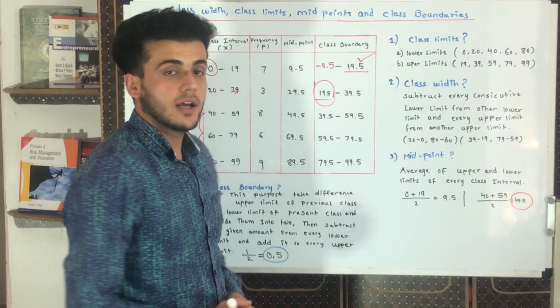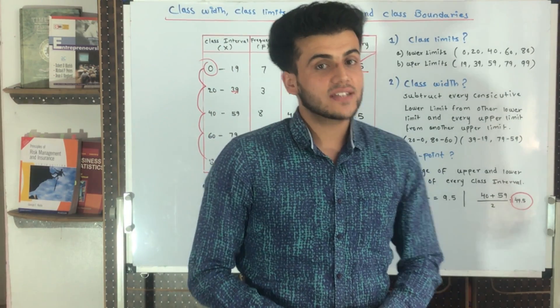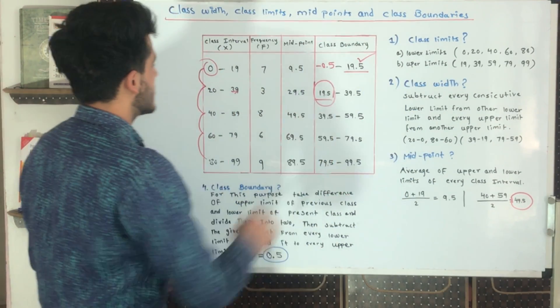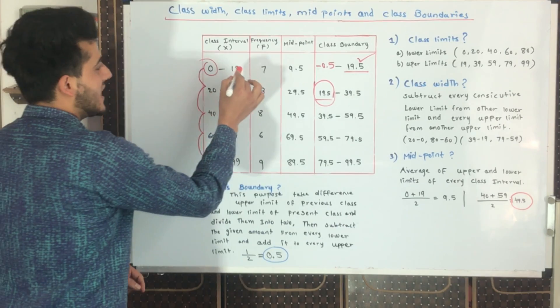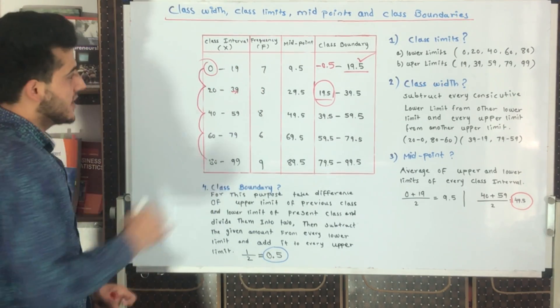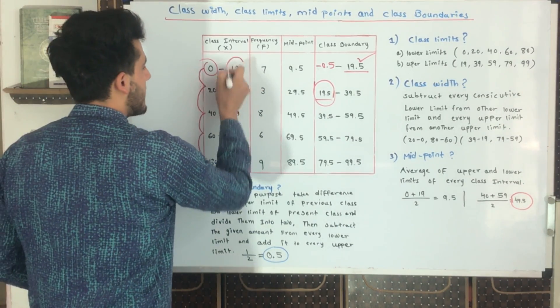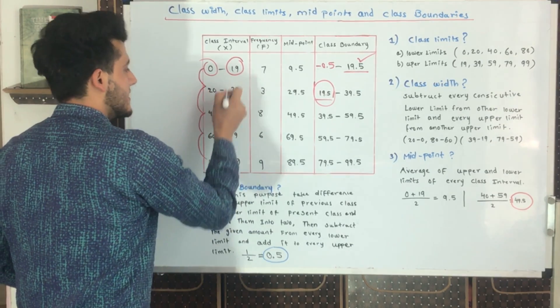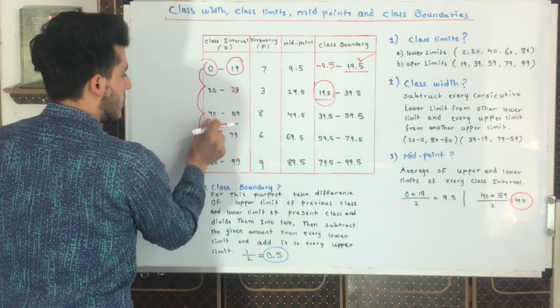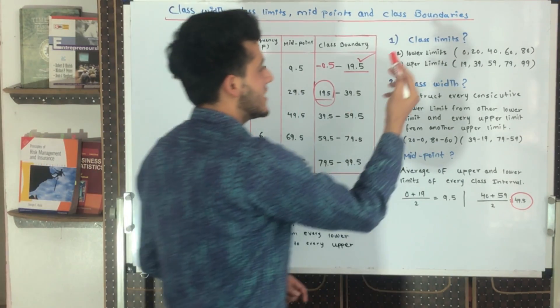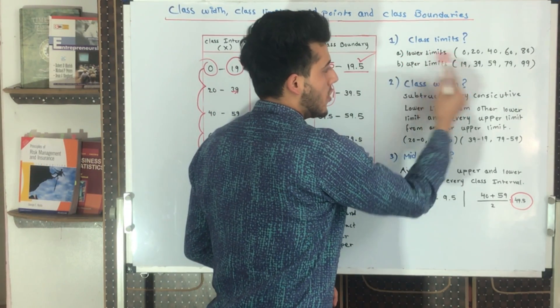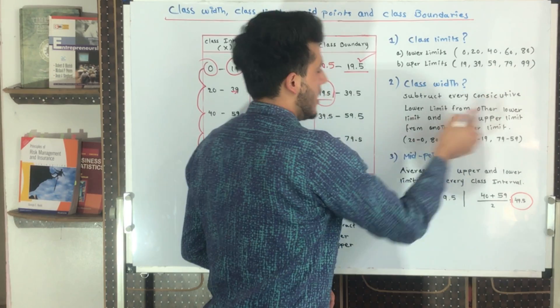First of all, we study the easiest one, which is class limit. Class limits are the lower limit and upper limit of every class interval. This is the lower limit, this is the upper limit. For example, 40 is the lower limit, 59 is the upper limit. Class limit is a combination of lower limits on the left side and upper limits on the right side.